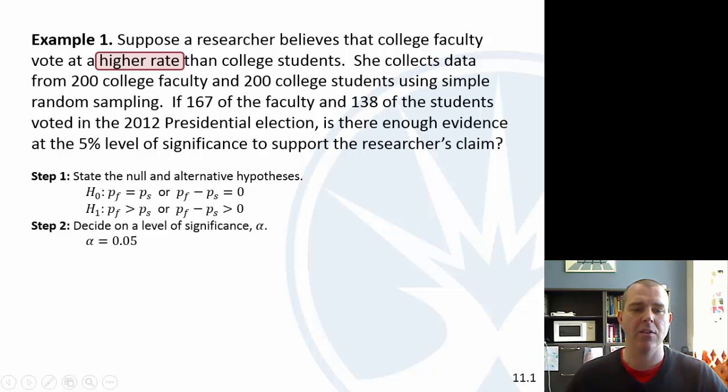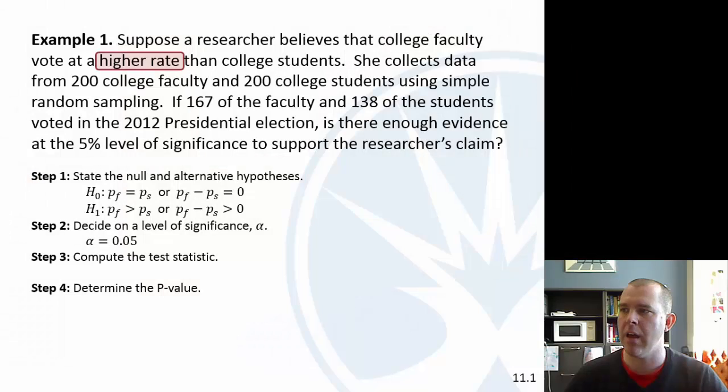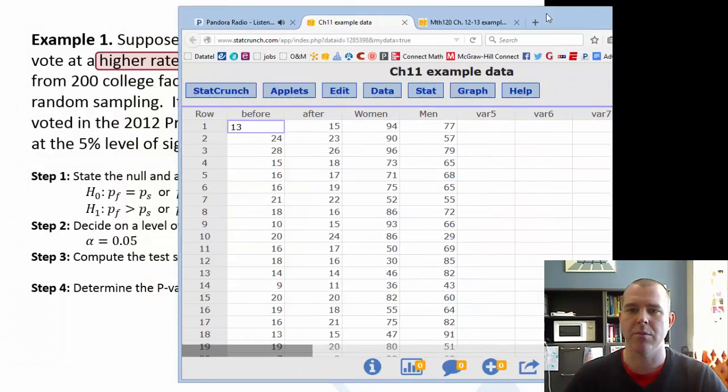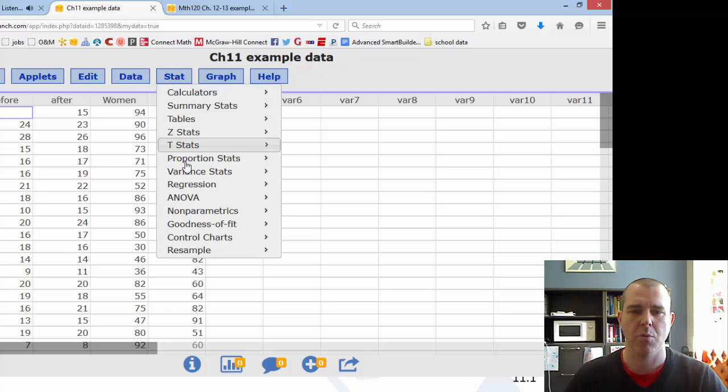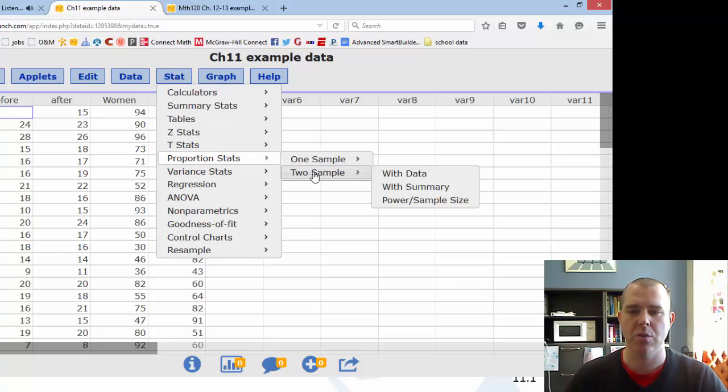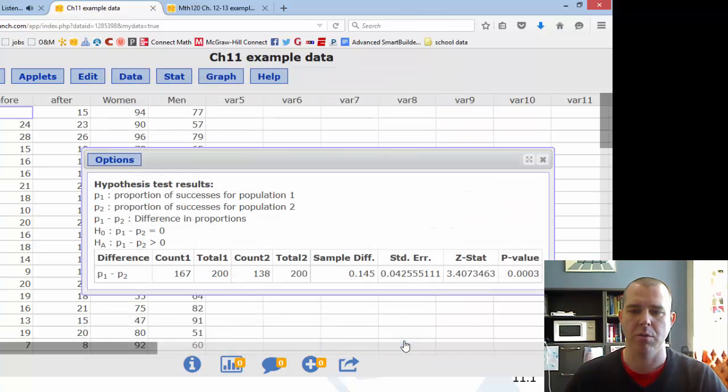Level of significance, we're told to use .05 like usual. Then we're going to do test statistic and p-value. So let's see, Stat, proportion stats. Now we're doing two sample with summary. We had 167 out of 200 for faculty, 138 out of 200 for students. The null hypothesis is that the proportion was equal. The alternative is that it is greater than. So we'll compute.